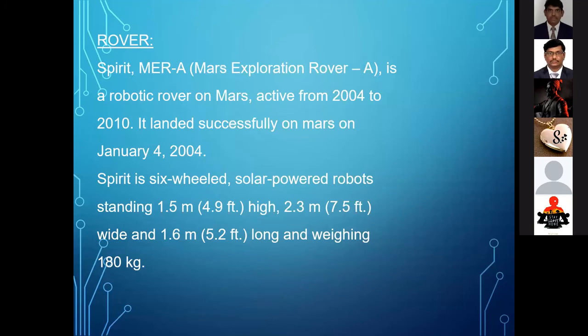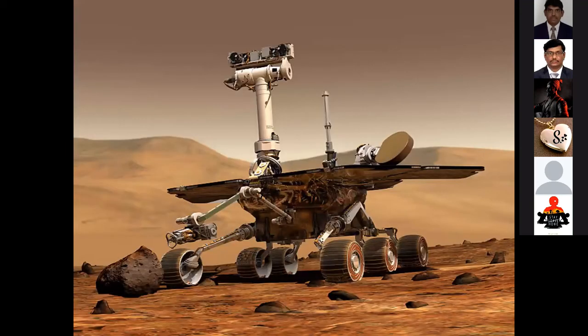The Rover Spirit, Mars Exploration Rover-A, is a robotic rover on Mars that operated from 2004 to 2010. It launched successfully and landed on Mars on January 4, 2004. Spirit is a six-wheeled, solar-powered robot standing 1.5 meters high, 2.3 meters wide, 1.6 meters long, and weighing 180 kg. This is an image of that Mars Exploration Rover A.